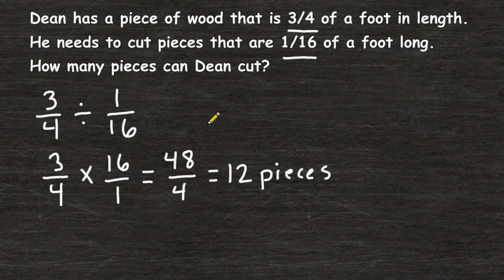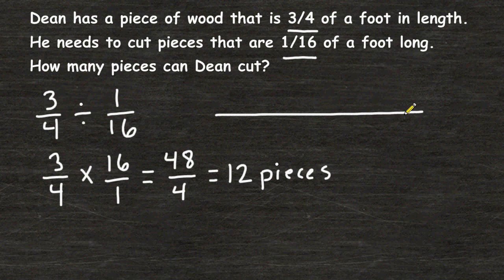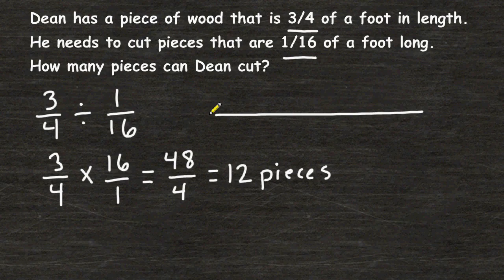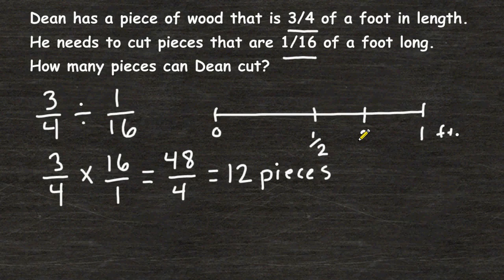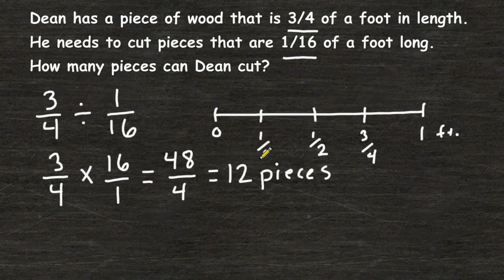Another strategy that we can use to solve this problem is by drawing a diagram. So I am going to start by drawing a line that represents the length of the piece of wood. And I am going to start by marking the beginning of that piece of wood as 0. We are going to say that this right here is 1 foot. Halfway, of course, is 1 half of a foot. This would be 3 quarters of a foot, which is actually the length of the original piece of wood. And this mark right here is 1 fourth of a foot.